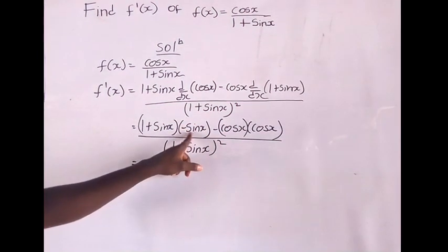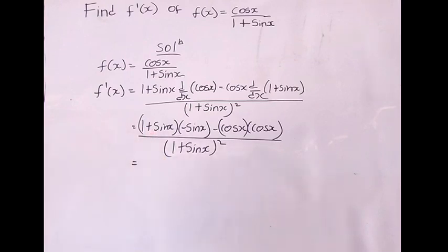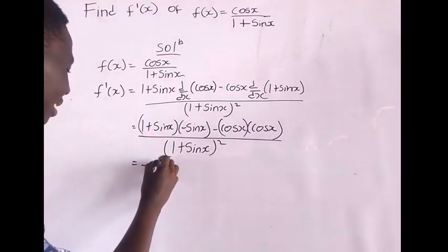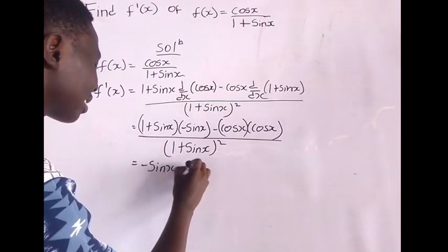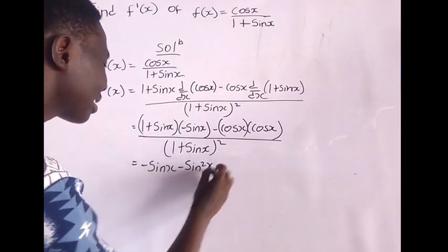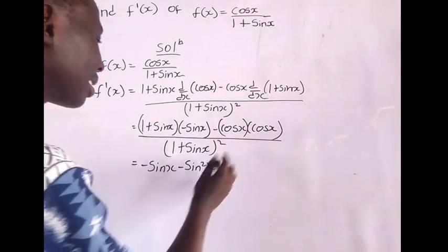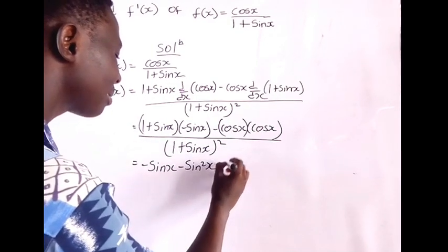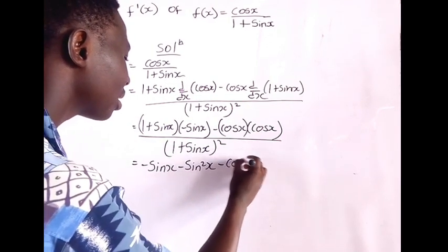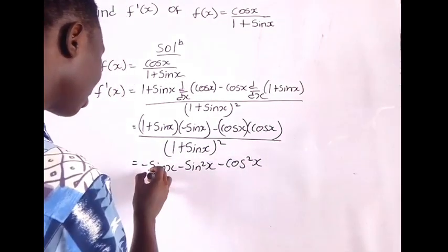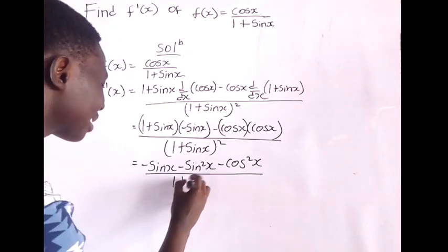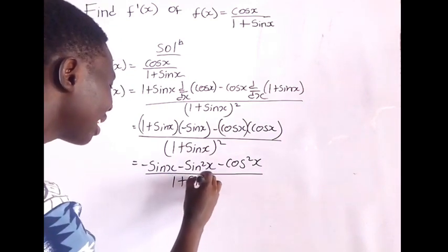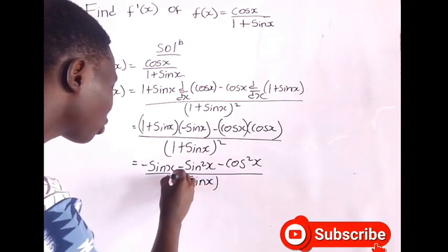So expanding: −sin x goes into (1 + sin x), giving us −sin x − sin²x, and then this gives us −cos²x, all over (1 + sin x) squared.